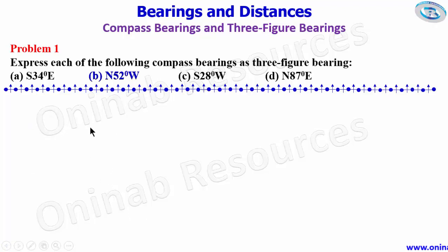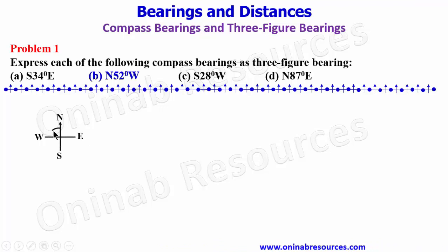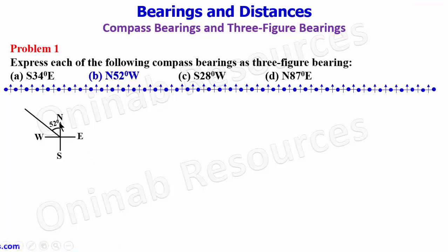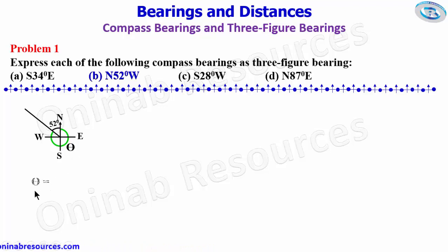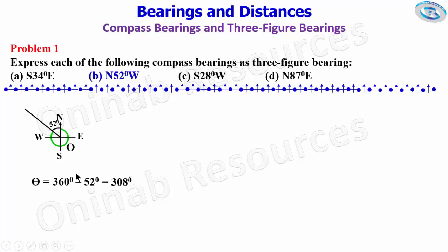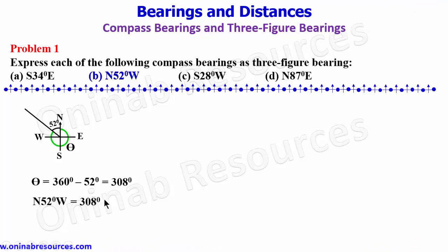For B, we have north 52 degrees west. We take our point, move from the north to the western direction for 52 degrees, and draw the line. For the three-figure bearing, we start from the north and move clockwise until we get to this line. We call it theta, and since the angle at a point is 360 degrees, theta equals 360 degrees minus 52 degrees, which gives 308 degrees. So north 52 degrees west equals 308 degrees.